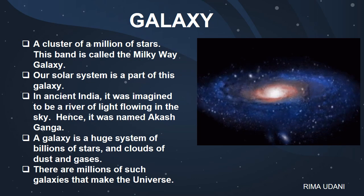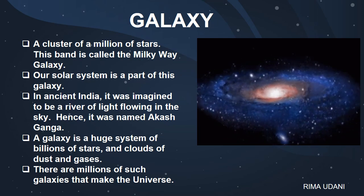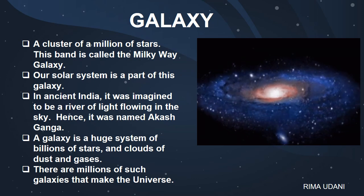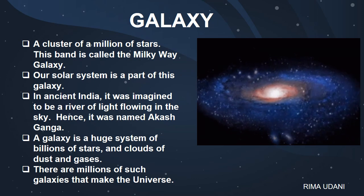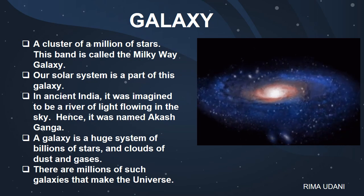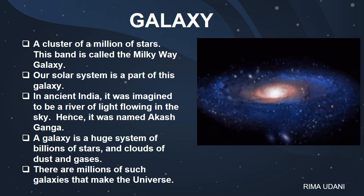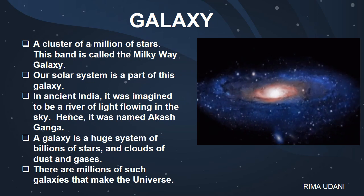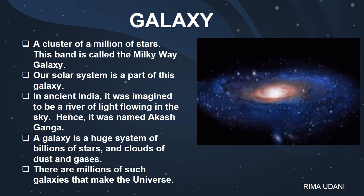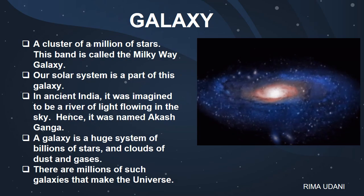Let's look at a larger picture — the galaxy. A cluster of millions of stars forms a band called the Milky Way galaxy. Our solar system is a part of this galaxy. In ancient India, it was imagined to be a river of light flowing into the sky, and hence it was named Akash Ganga. A galaxy is a huge system of billions of stars and clouds of dust and gases. There are millions of such galaxies that make up the universe. On a clear starry night, you can see a whitish broad band like a glowing path across the sky. It is difficult to imagine how big the universe is — scientists are still trying to find out more about it. We are not certain about its size, but we surely know that all of us belong to this universe.